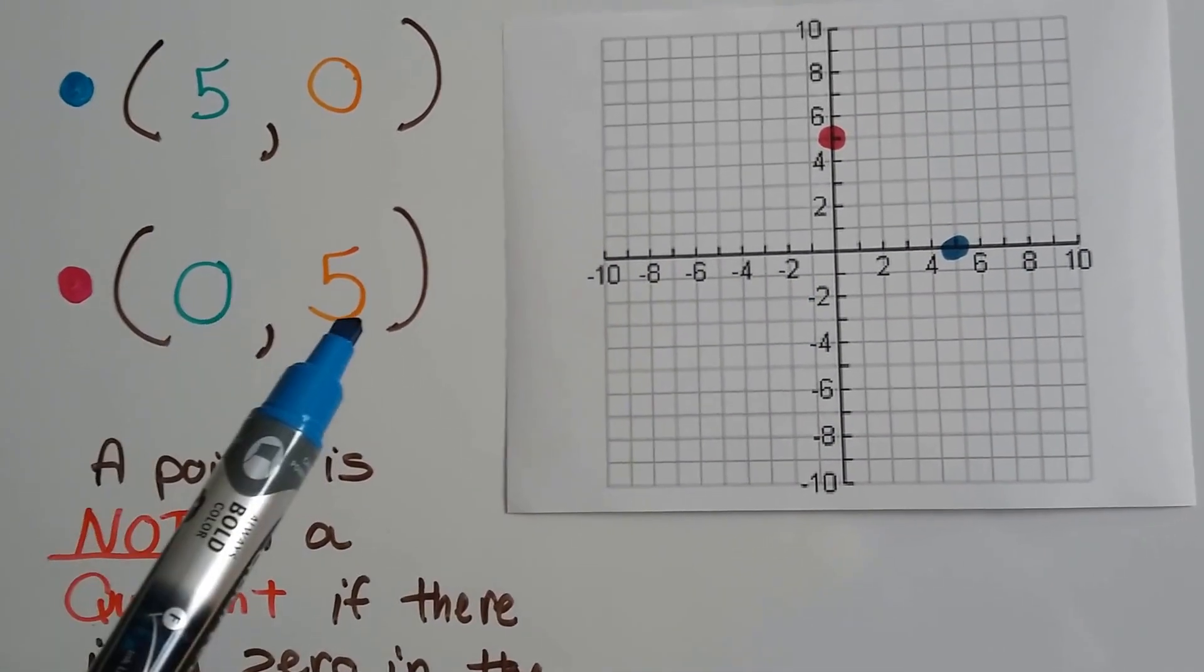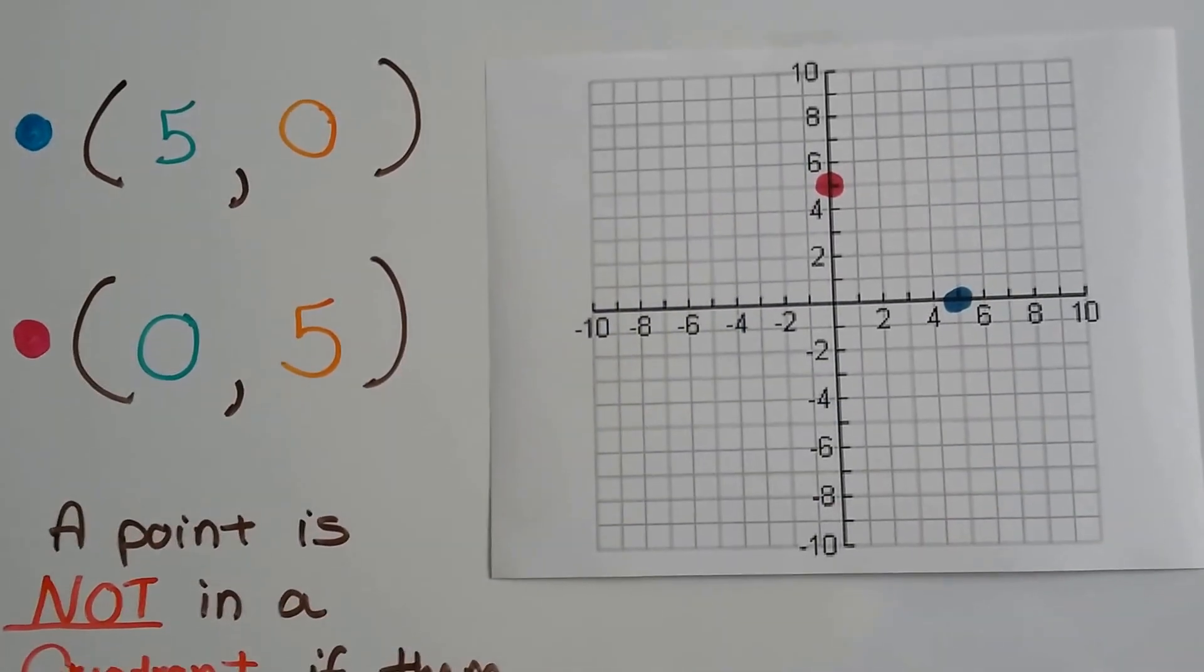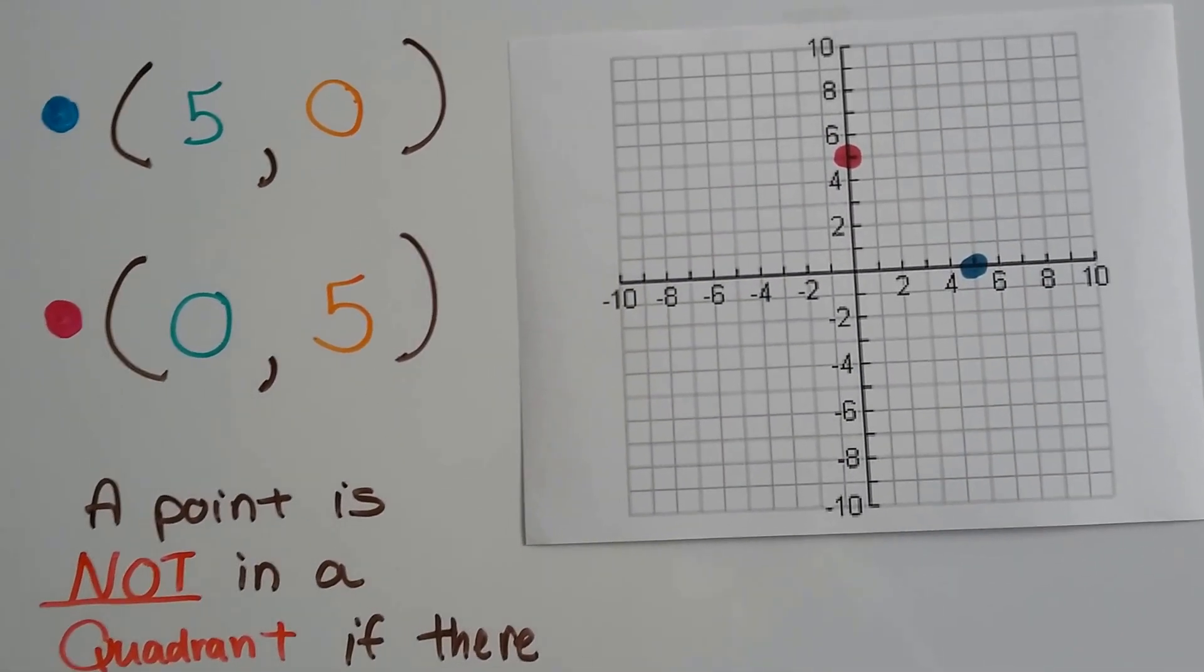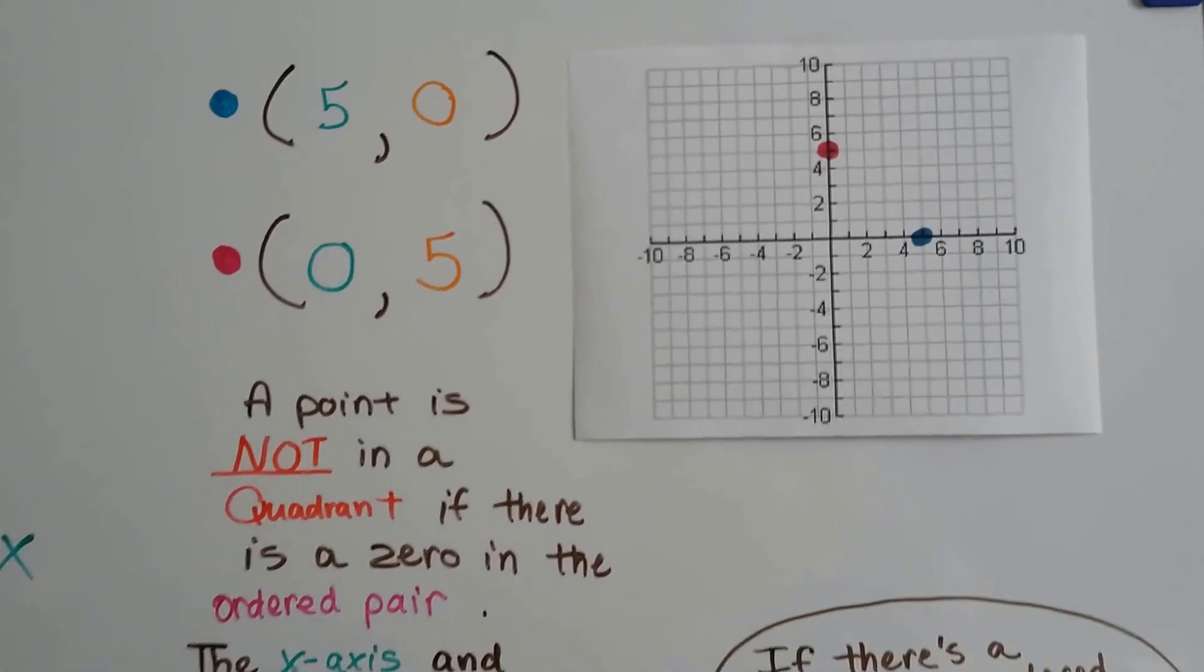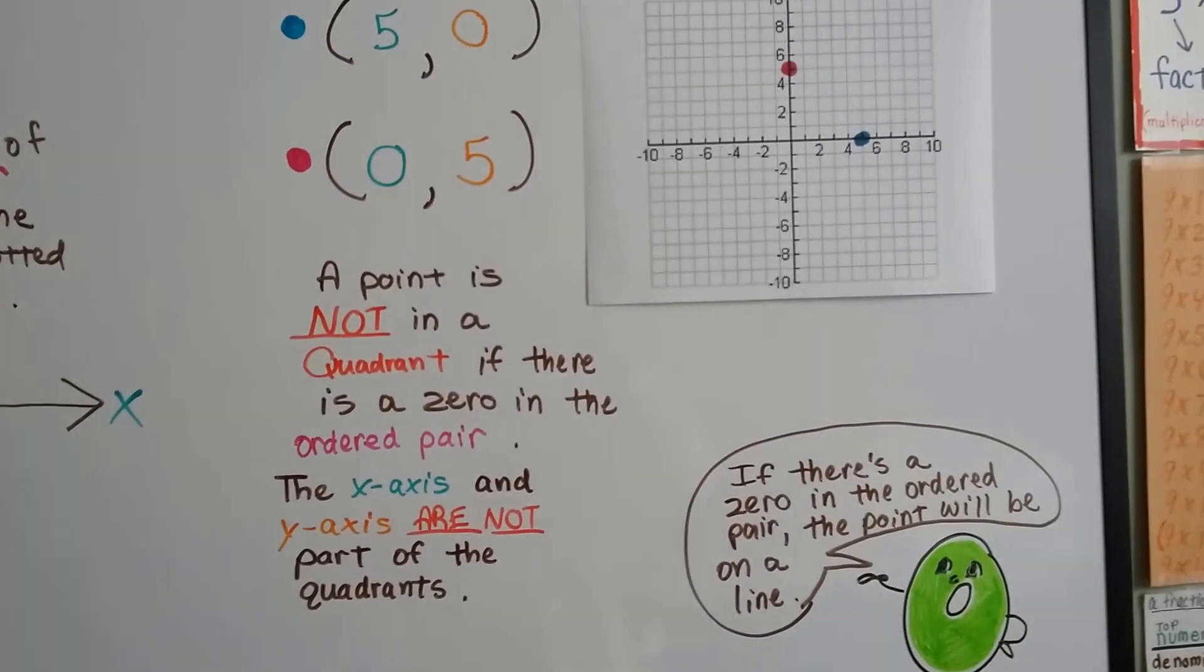And if we've got a zero and then a five, it's going to be up here. So it's very different, isn't it? So don't confuse these two. You've got to remember where the x-coordinate is and the y-coordinate is.